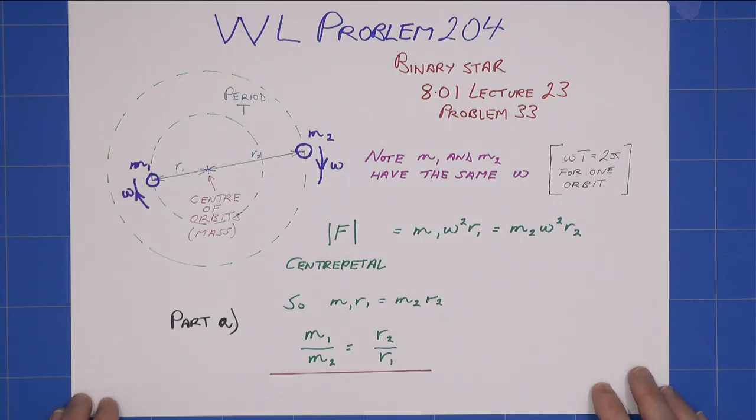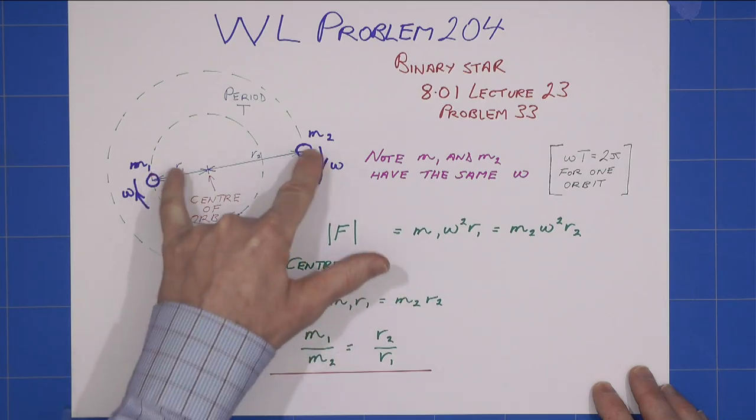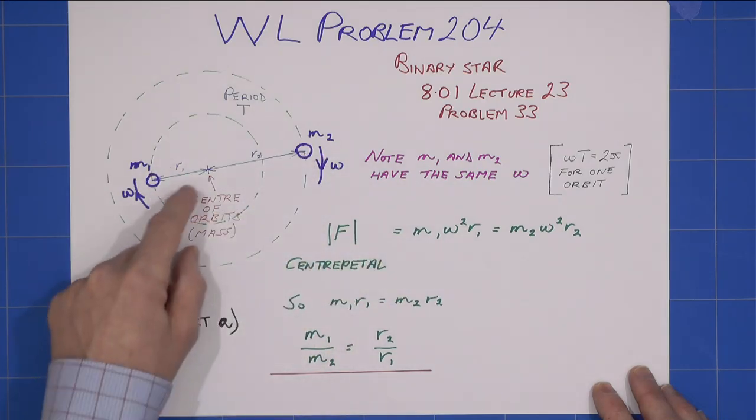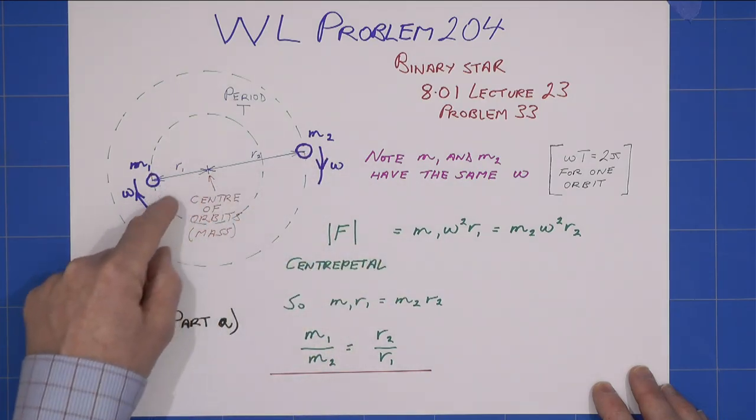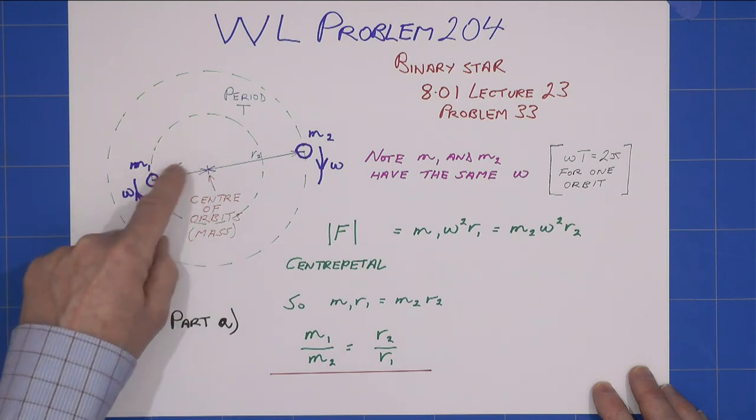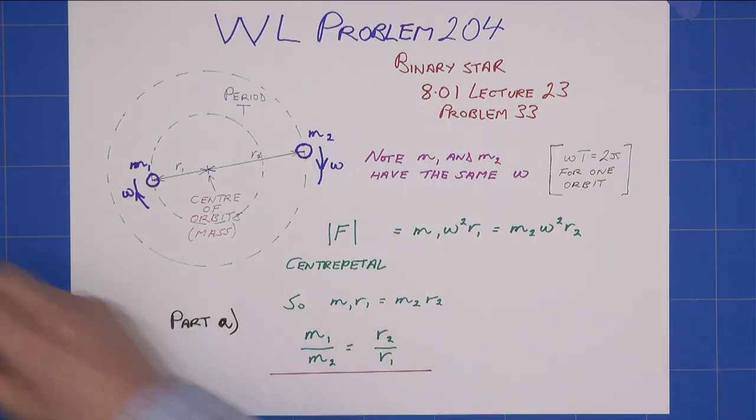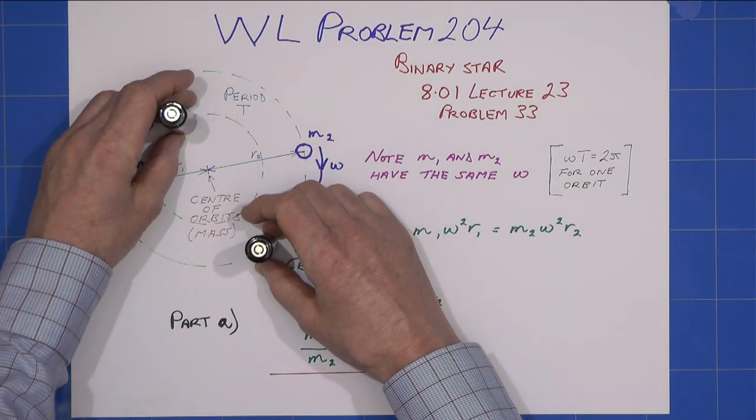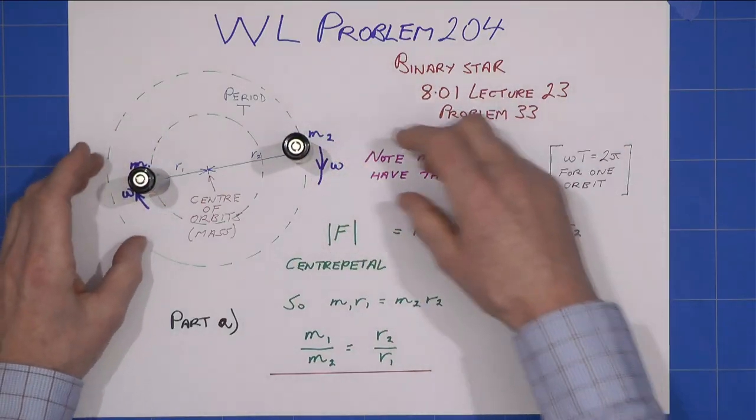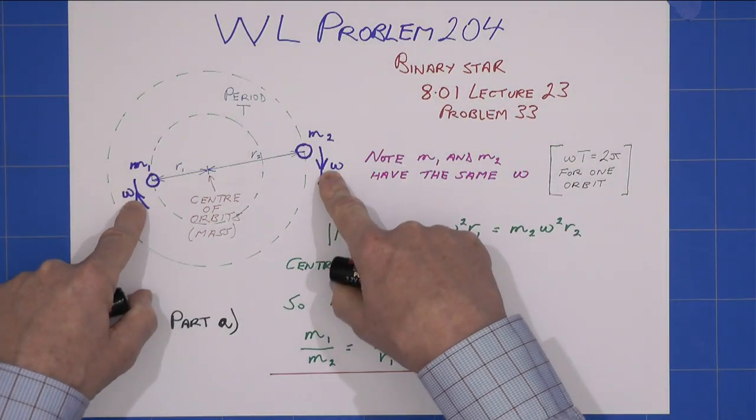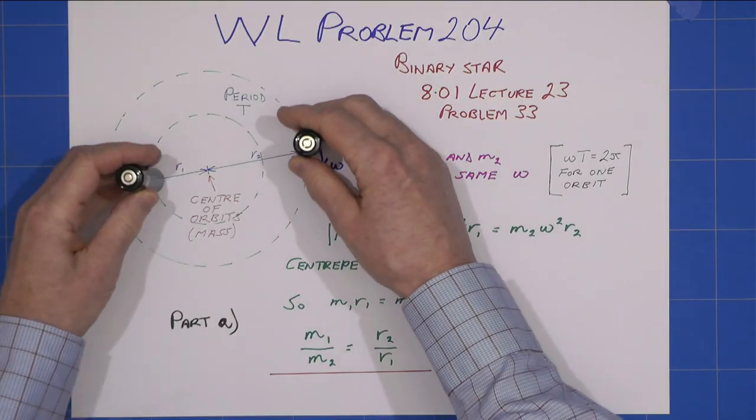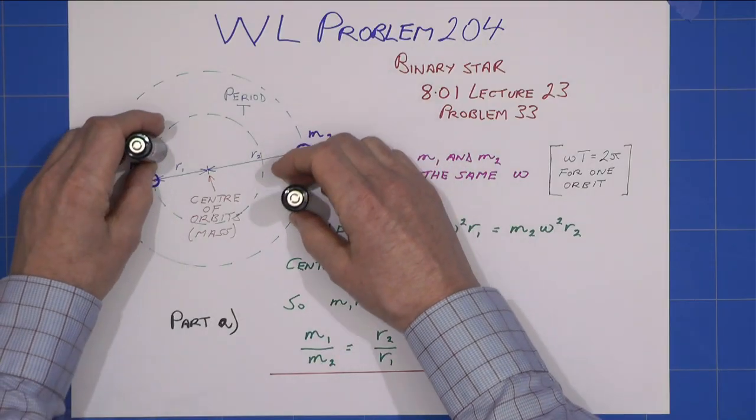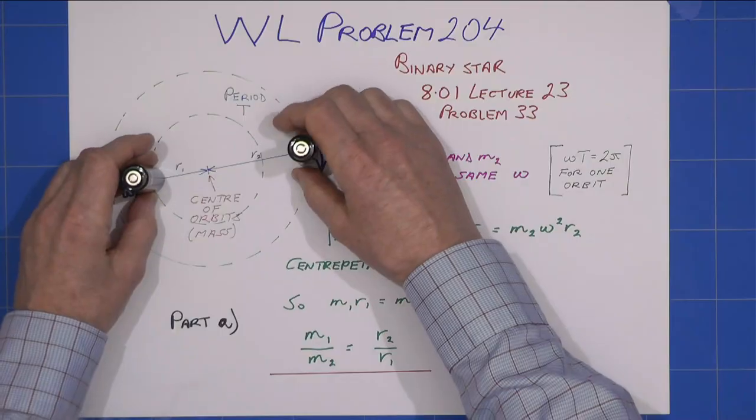So we have our two stars, m1 and m2, and they have a common center of orbit, or center of mass I should say. They are orbiting around, and they have the same period and hence the same angular velocity ω.